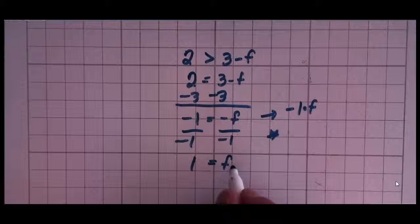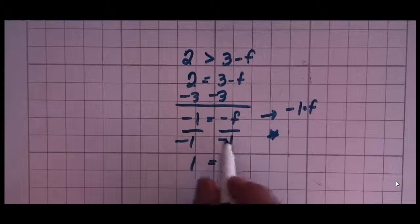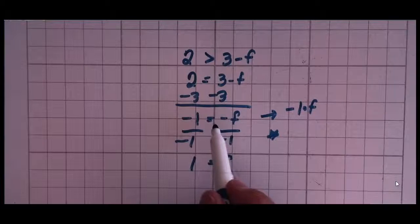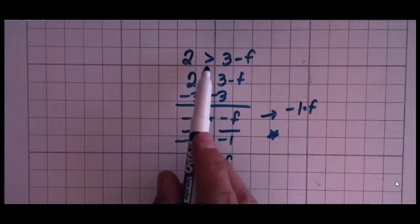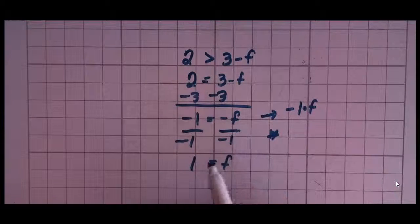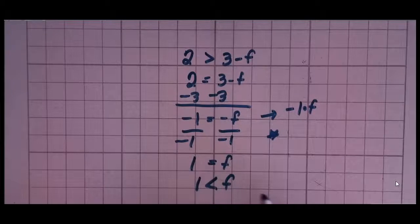But it doesn't really equal f because this is an inequality problem. I just have to decide what direction this is going to go. If I multiplied or divided by a negative number, it's going to switch directions. And I did divide by a negative number. So it becomes 1 is less than f.